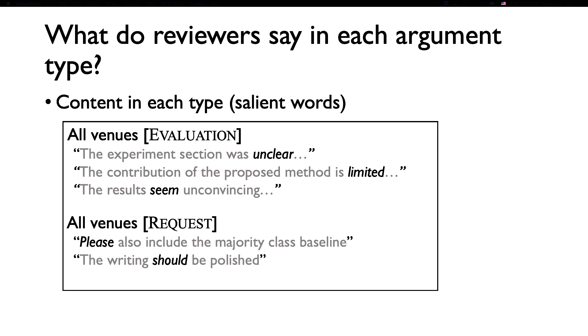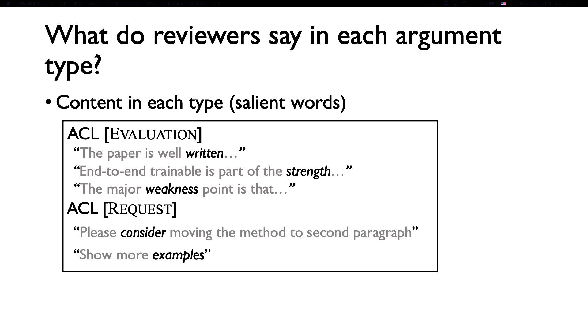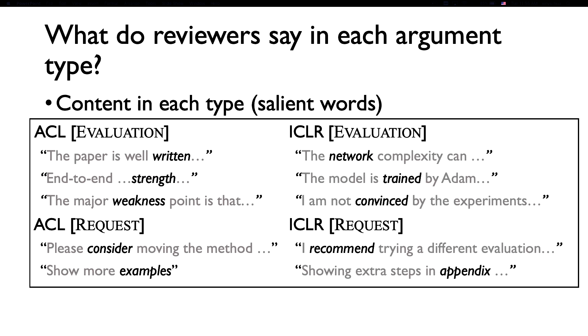For the requests, we see that UAI starts with please, and use words that ask for some actions. On ACL reviews, we see written, strengths, and weakness are popular words. So maybe we care more about how well the paper is written. And for the request type, we see words such as consider and examples. Here we also compare the ICLR frequent words with ACL, and we see that it's obvious that in the machine learning community, they tend to mention more technical terms such as the network or how the model is trained. Also, interestingly, in the request type, they mention about appendix and recommend more than ACL.